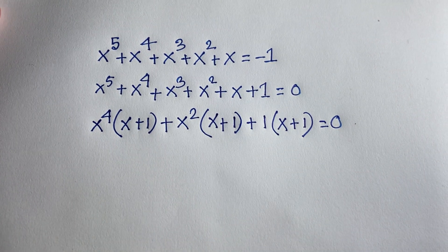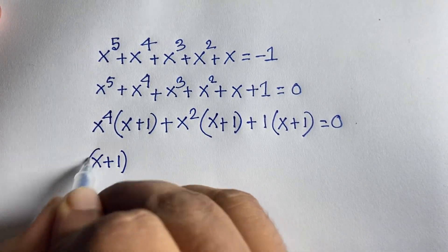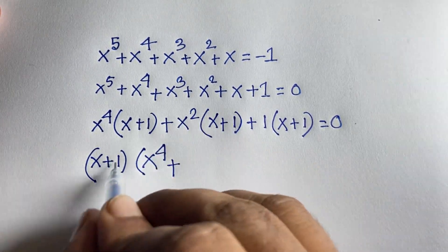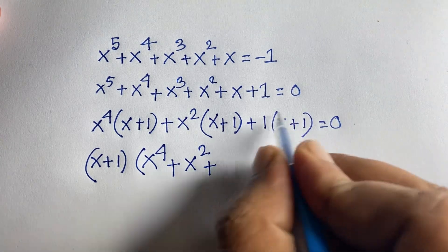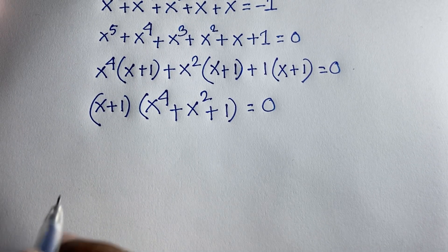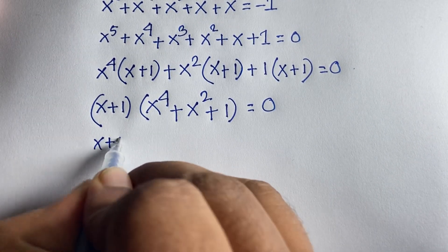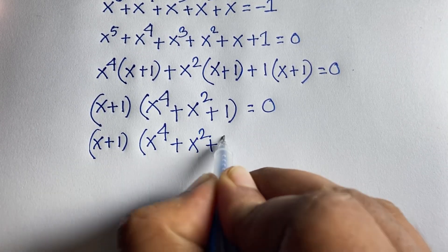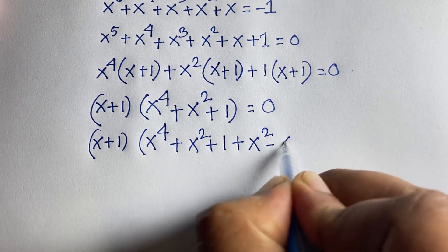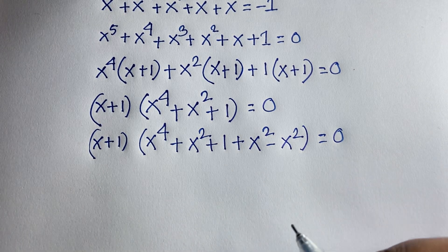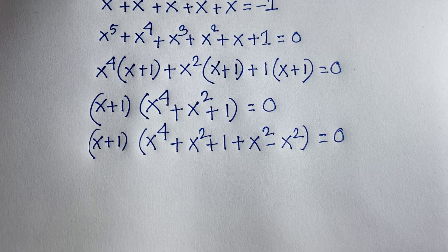Now I can say that x plus 1 is common. So factoring out x plus 1, we get x plus 1 times x to the power 4 plus x squared plus 1 is equal to 0. At this moment, I add x squared and again subtract x squared — both are equal — so it becomes x plus 1 times x to the power 4 plus 2x squared plus 1 minus x squared is equal to 0.